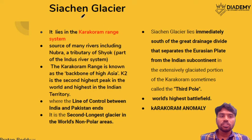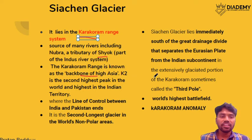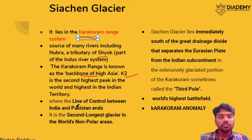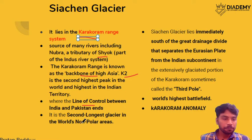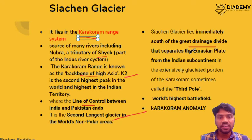The Siachen Glacier lies in the Karakoram Range and is a source for many rivers like the Nubra, which is a tributary of the Shyok River. Shyok is part of India's water system. The Karakoram Range is also known as the backbone of High Asia, and in this region K2 is the highest peak within Indian territory. The Siachen Glacier marks the line of control between India and China and is the second longest glacier in the world in non-polar areas.